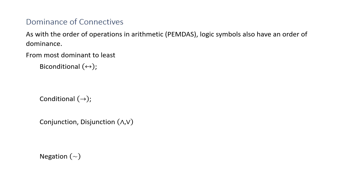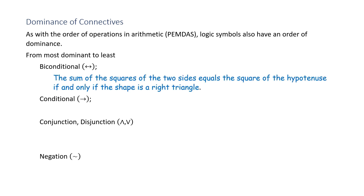The most dominant is the biconditional (if and only if). Example: 'The sum of the squares of two sides equals the square of the hypotenuse if and only if the shape is a right triangle.' The 'if and only if' lets us read it in the other direction as well.